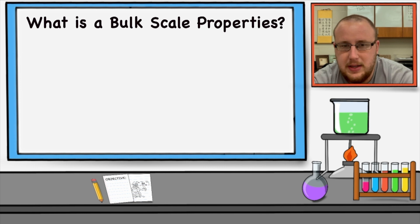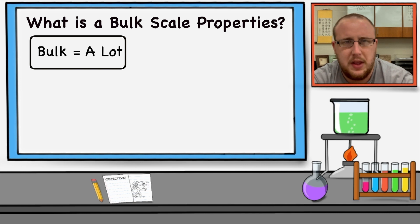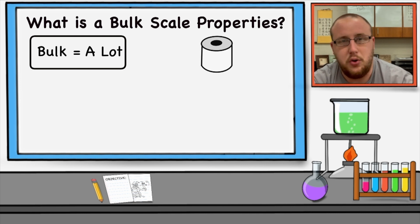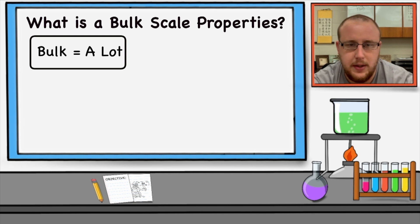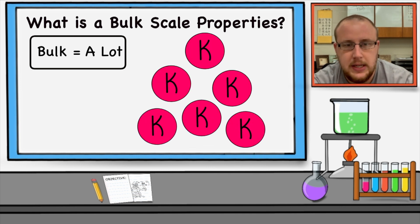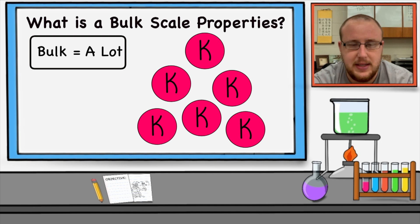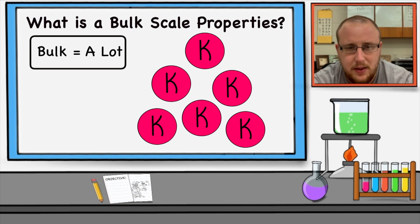The first thing we're going to talk about is what exactly is bulk scale. Anytime we're talking about something in bulk, we're thinking a lot of it. So whether you're buying toilet paper and hoarding that up, or you're talking about some other item, we're talking about a lot of something. This is the same in chemistry. When we're talking about bulk scale properties, these are properties that are affected by a lot of atoms. The only caveat is, in chemistry, because we study stuff that's really small, a bulk scale — a lot of an atom — will probably not look like a lot typically.